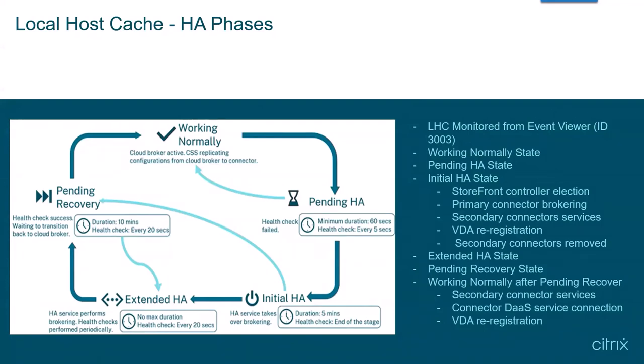During normal working conditions, connectors are in the working state. If, for any reason, the connectors are unable to connect to the Citrix Cloud service endpoints, they enter a state called pending. Connectors will stay in the pending state for 60 seconds, performing a health check every 5 seconds on the cloud service endpoints. If connectivity becomes stable again during this 60-second interval, the connectors will exit pending state and return to the working state.